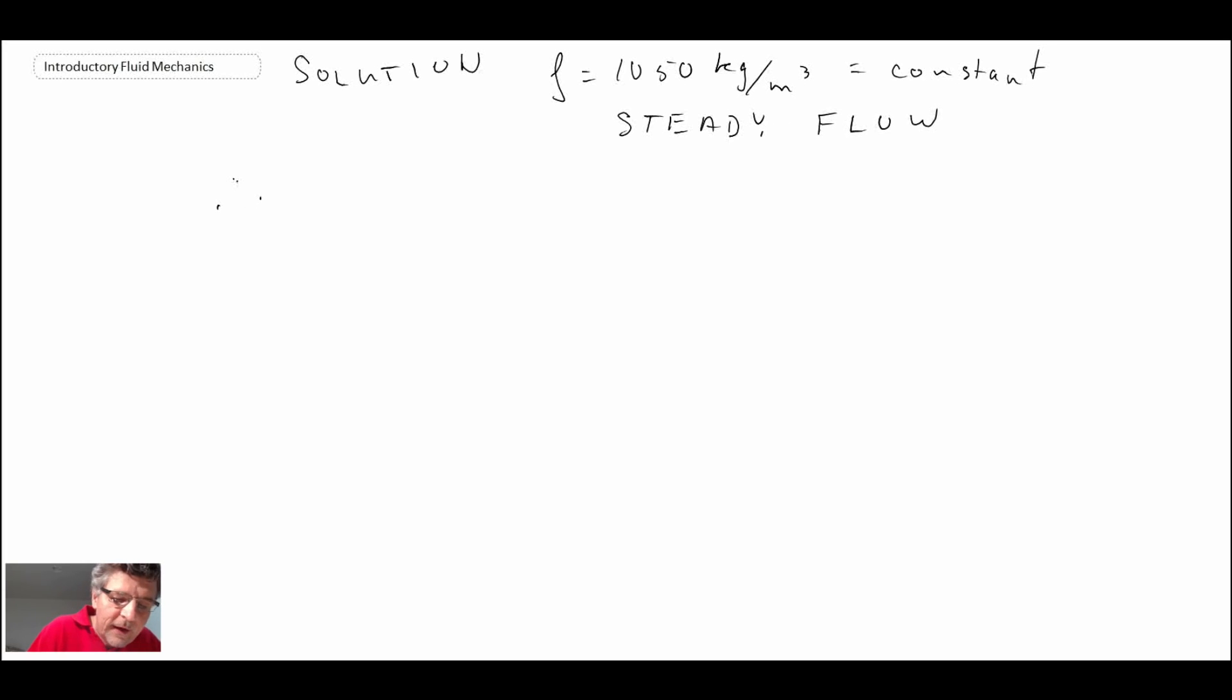So given that it's incompressible, steady flow, we can write the mass conservation equation as being this integral across the control surfaces. These are the three control surfaces where we have mass crossing the boundary. So I'm going to expand that out and call it control surface one, two, and three for the two inlets and the one exit.